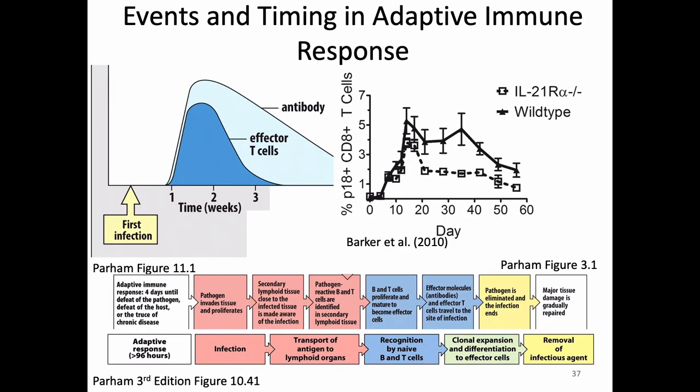Once our T cell gets to the lymph node, it can actually get activated and do some signaling and get turned on. Next time we're going to see the signal transduction cascade that happens in a T cell that allows it to become activated. We're going to be thinking about T cell activation largely for the rest of this week — next time is going to be a signal transduction extravaganza.